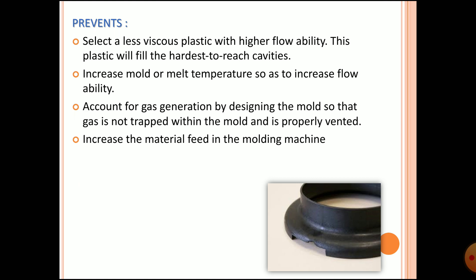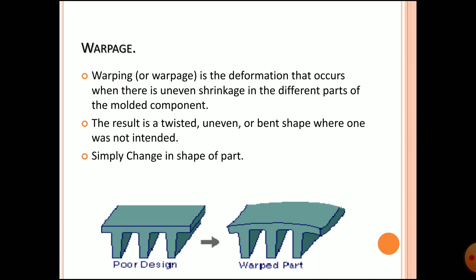Prevention: select a less viscous plastic with higher flow ability so the plastic will fill the hardest-to-reach cavities. Increase the mold or melt temperature to increase flow ability. Design the mold to account for gas generation so that gas is not trapped within the mold and is properly vented. Also increase the material feed in the molding machine, taking care of the feed speed.